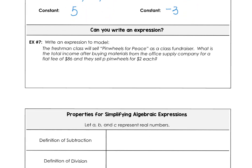In example 7, you want to write an expression that will model, the freshman class will sell pinwheels for peace as a fundraiser. What would be the total income after buying materials from office supply company? That was a flat fee of $86, so this is our expense. And then they sell the pinwheels for $2 a piece. So if we allowed the letter P to stand for the number of pinwheels that are sold, and we want to know how much they make, then the total would be $2 for every pinwheel sold, but they have to subtract the $86 to get the materials to make the pinwheels for the donation.